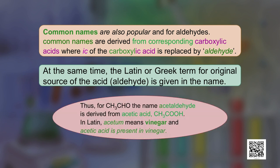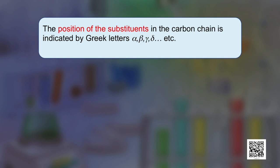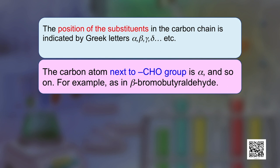Thus for CH3CHO, the name is acetaldehyde, derived from acetic acid (CH3COOH). In Latin, 'acetam' means vinegar, and acetic acid is present in vinegar. Similarly, HCHO is called formaldehyde, from formic acid (HCOOH), which was first obtained from red ants — in Latin 'formica' means ant. The position of substituents on the carbon chain is indicated by Greek letters alpha, beta, gamma, delta, etc., with the carbon atom next to the CHO group called alpha.